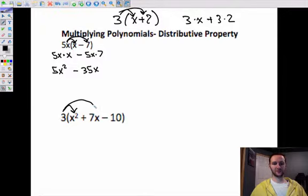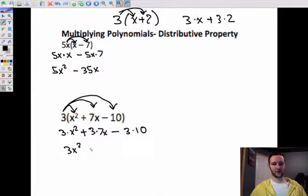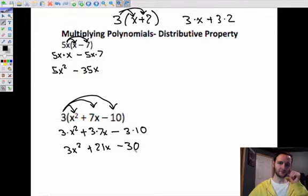Down here, this is even more traditional, just distributive property. So this is 3 times x squared plus 3 times 7x minus 3 times 10. So that's 3x squared plus 21x minus 30. Okay, those are pretty straightforward.